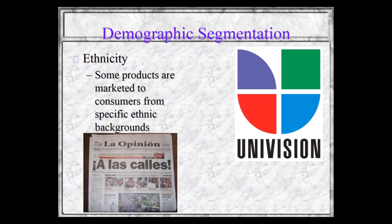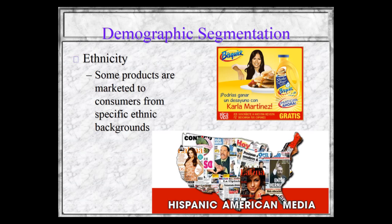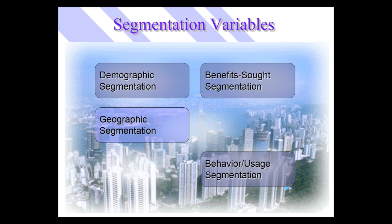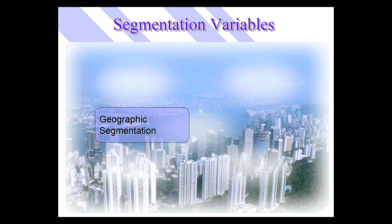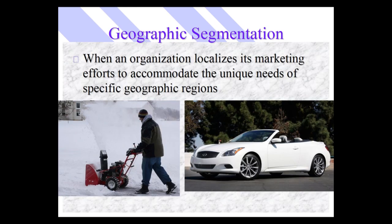Some products targeting Hispanics are niche products like Goya, but some are more mainstream products like Bisquick — they simply have Spanish overlays or Hispanic marketing overlays to their mainstream marketing program. Geographic segmentation is another variable. Clearly, some products appeal more to people in different geographies — you'll sell a lot more snowblowers in the Northeast and Upper Midwest, and more convertibles in the Southeast and Southwest.